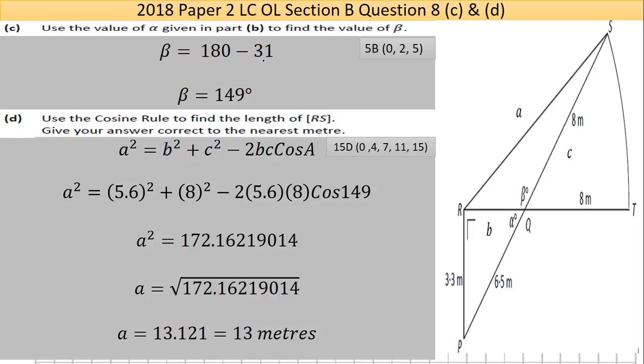Beta equals 180 take away 31 and that gives you the answer 149. So that's 31 there, the whole thing is 180, so 180 take away 31 gives you the other angle that you're missing.